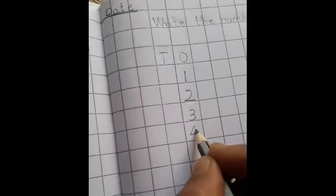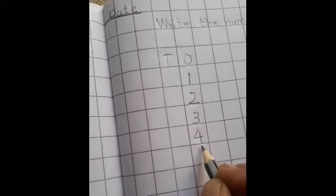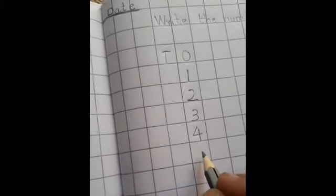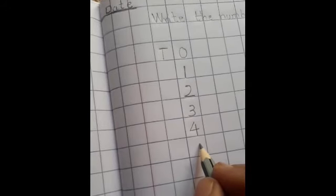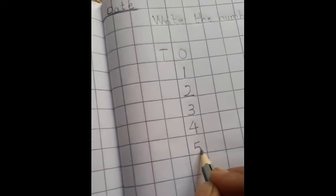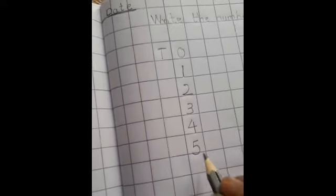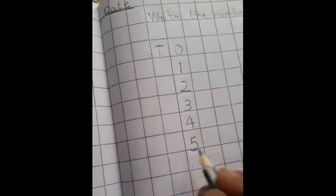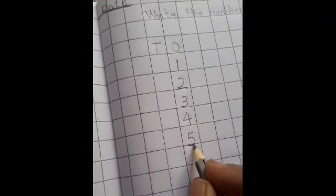Okay. Now for number 4, slanting line, sleeping line, and standing line. It become Number 4. For number 5, sleeping line, standing line, and left curve. It become Number 5.